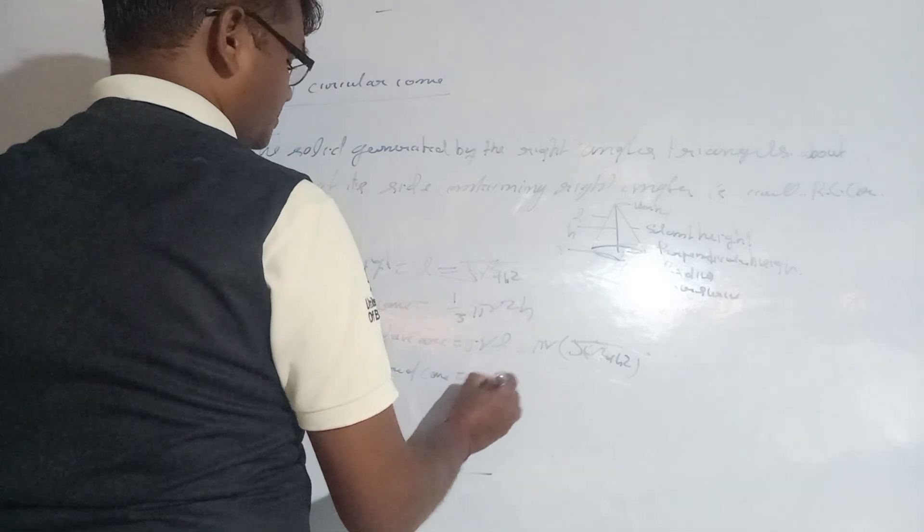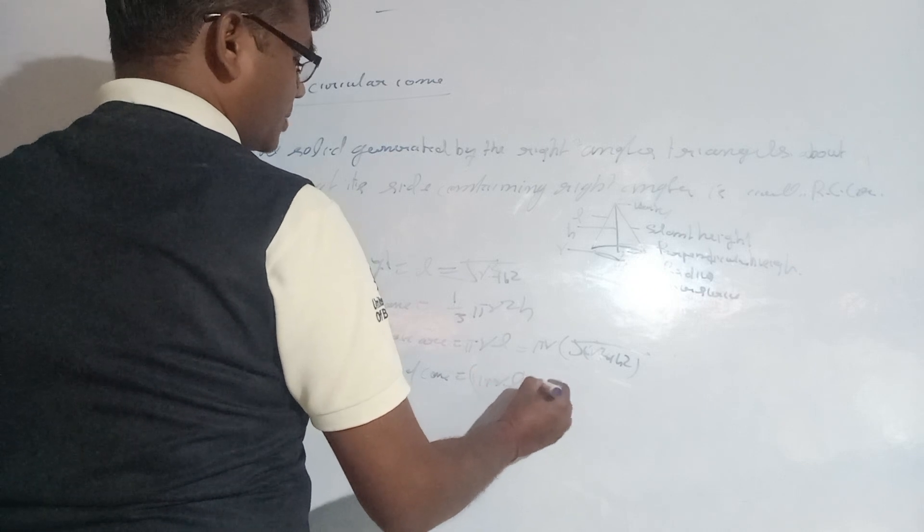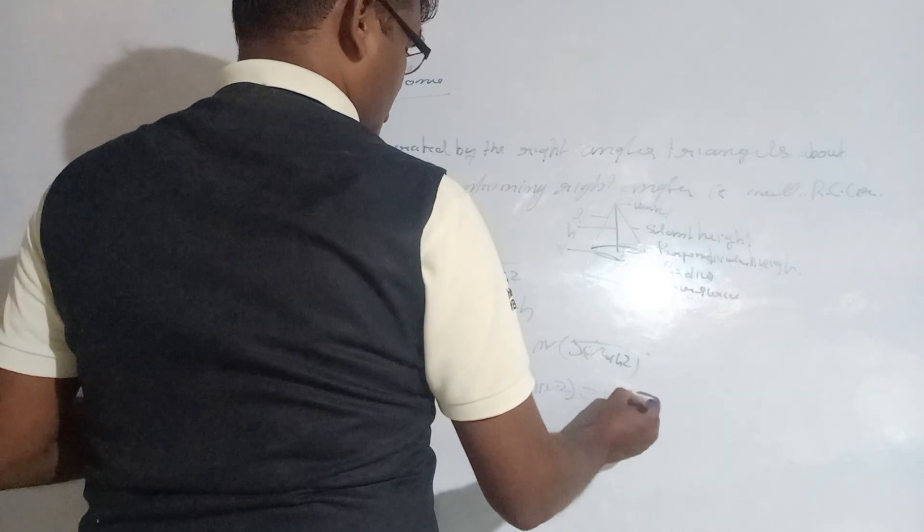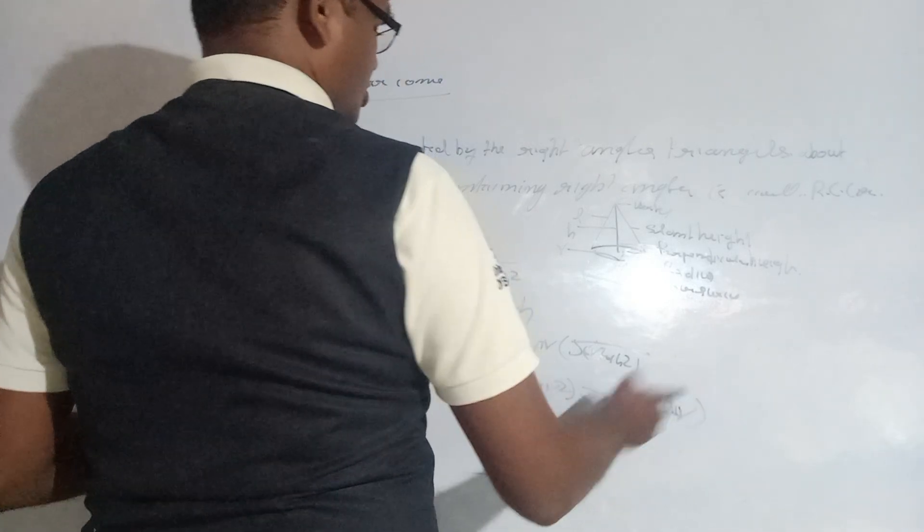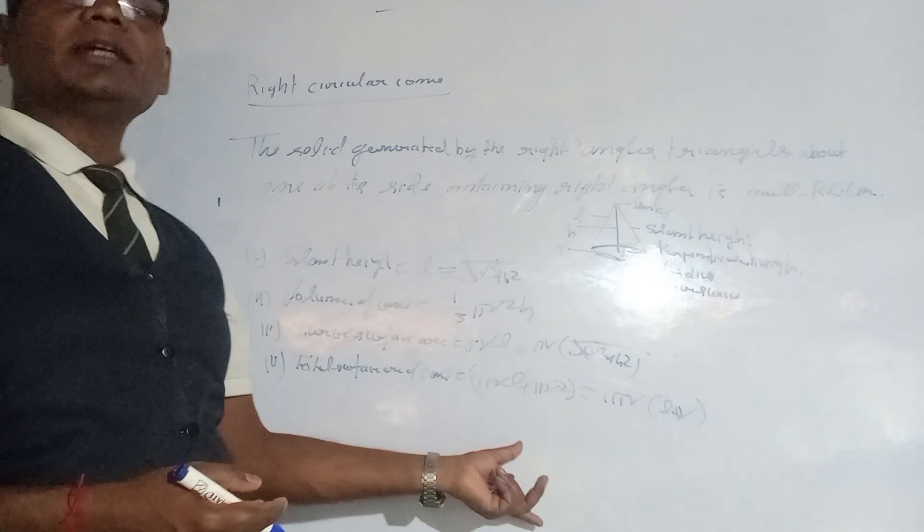Total surface area equals πr² plus πrL. We can take πr common, so it becomes πr(r + L). With the help of this, we can calculate and solve different types of questions.